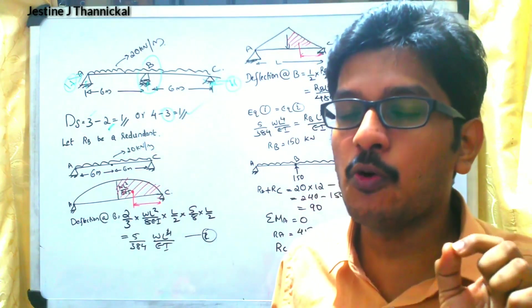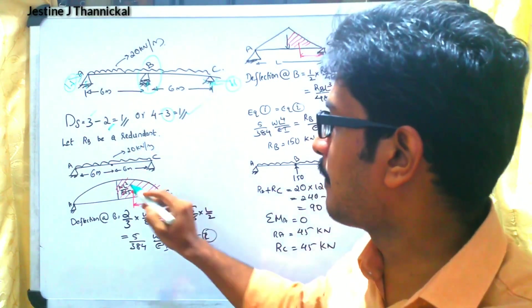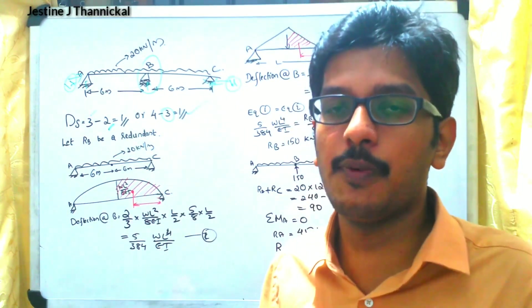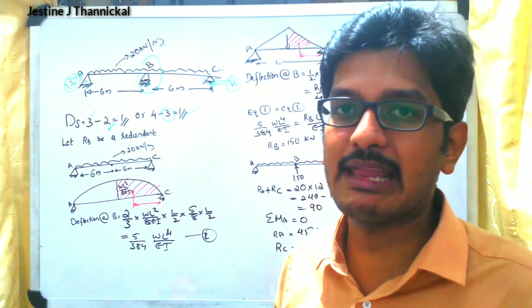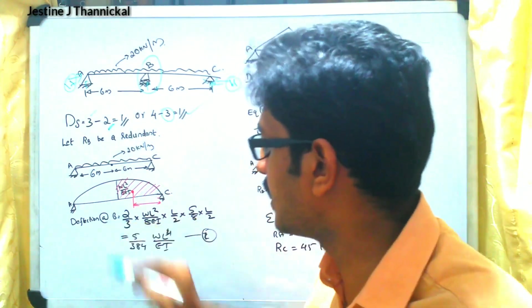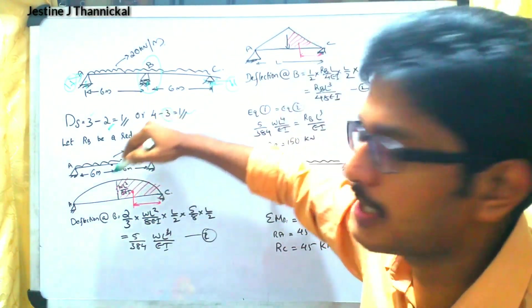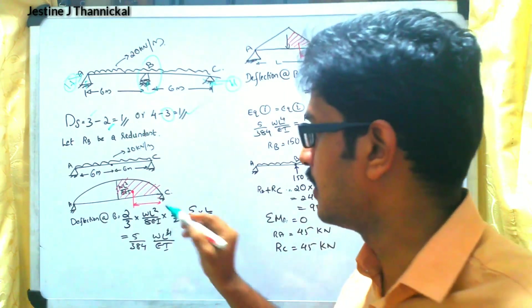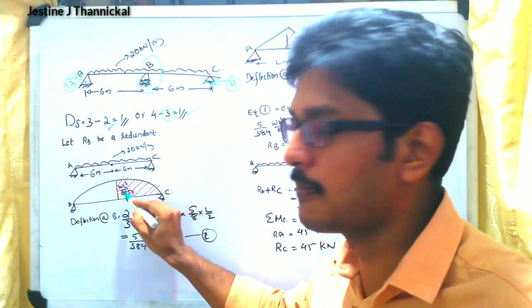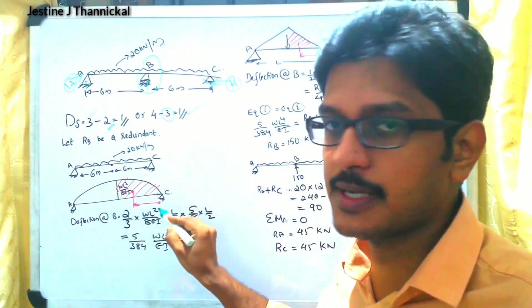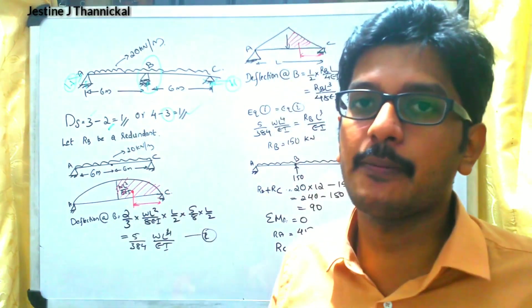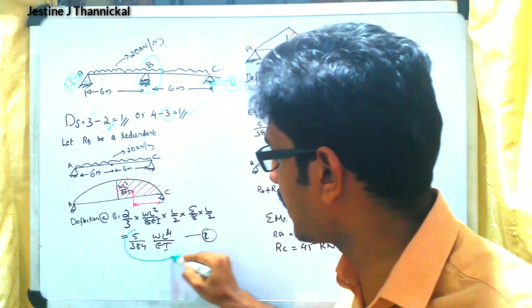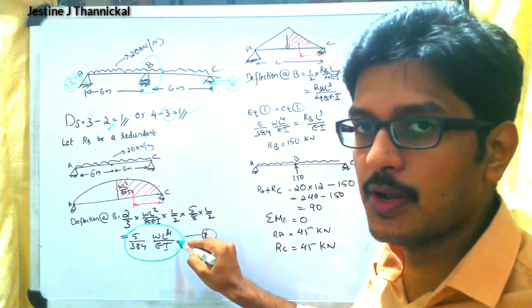If 20 kN per meter UDL acts over the simply supported beam, the maximum bending moment at the center is WL² / 8. Using the moment area method, we note WL² / (8EI). The area is (2/3) × (WL²/8EI) × (L/2), and multiplying by the center of gravity distance — 5/8 times the half span — we finally get 5WL⁴ / (384EI).